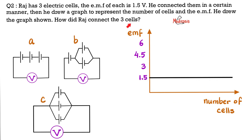The graph is shown here. The question is, how did Raj connect the three cells? Is it in manner A, in manner B, or in manner C? Pause the video. Try to solve it yourself.